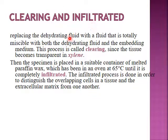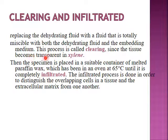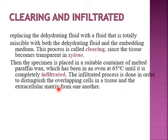Clearing and infiltration: replacing the dehydrating fluid — the alcohol — with a fluid that is completely miscible with both the dehydrating fluid and the embedding medium, which is paraffin wax. This process is called clearing, since the tissue becomes transparent in xylene. The specimen is then placed in a suitable container of melted paraffin wax in an oven at 65°C until it is completely infiltrated. The infiltration process distinguishes overlapping cells in tissue and the extracellular matrix from one another.